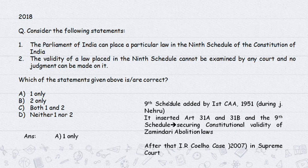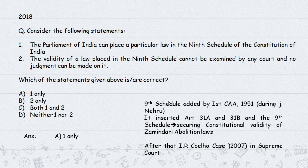The Ninth Schedule was introduced by the First Constitutional Amendment in 1951 under Nehru to protect the zamindari abolition act under Article 31. Laws placed in the Ninth Schedule were protected from court challenges. However, there was significant conflict between the judiciary, executive, and legislature over this immunity.